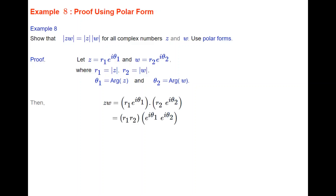Multiplying Z times W, we multiply R1·e^(iθ₁) times R2·e^(iθ₂). Putting the R's together at the front, that's R1 times R2. When we multiply terms in index form with the same base, we add the indices. So we get R1·R2·e^(i(θ₁ + θ₂)).